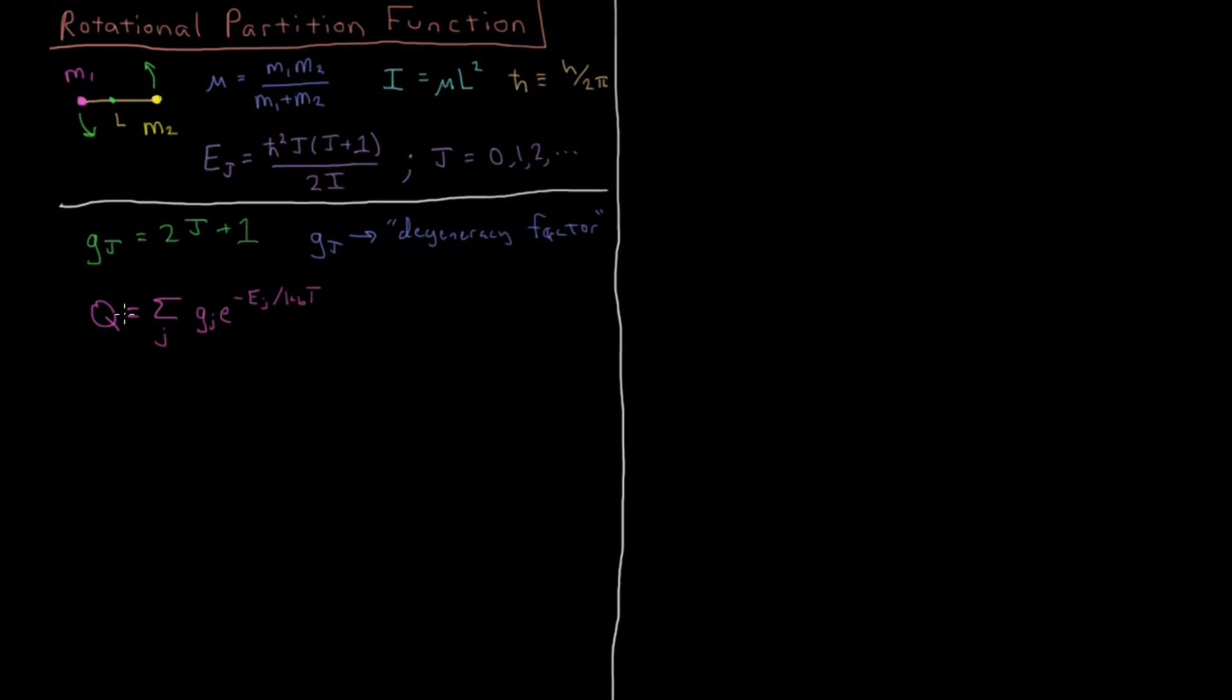For our rotational partition function, if we have all of our Boltzmann factors that we want to sum over, what we have is the rotational partition function as a function of temperature. Remember this is for a given diatomic molecule. You can't rotate if you're monatomic because there's nothing to rotate around, so this is the case for a diatomic molecule.